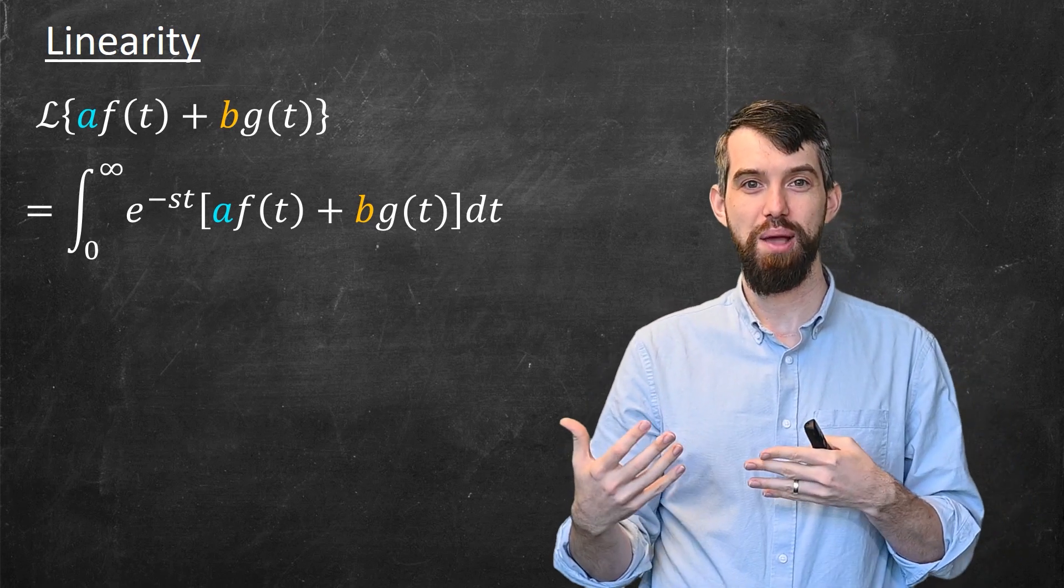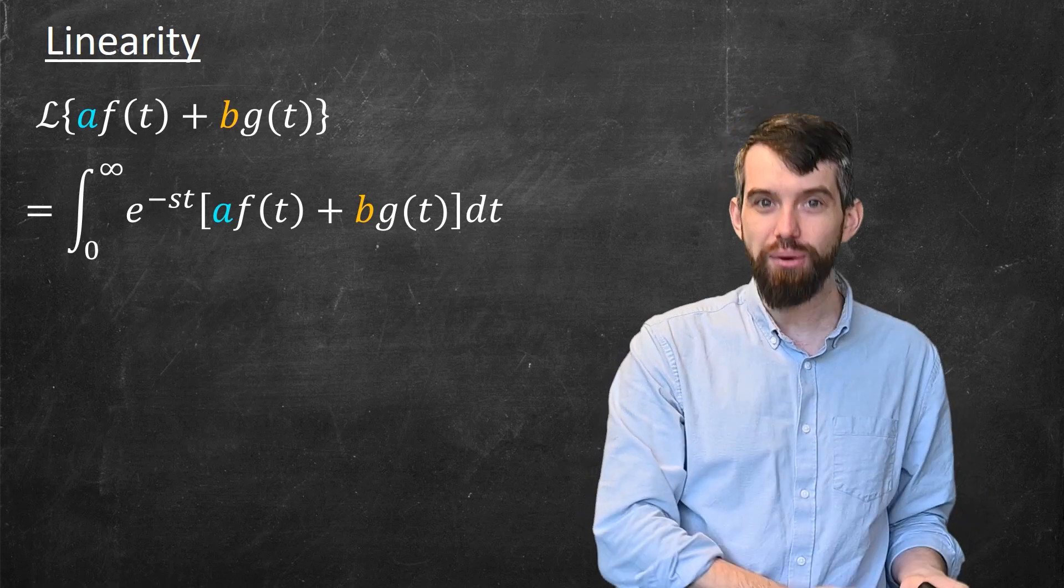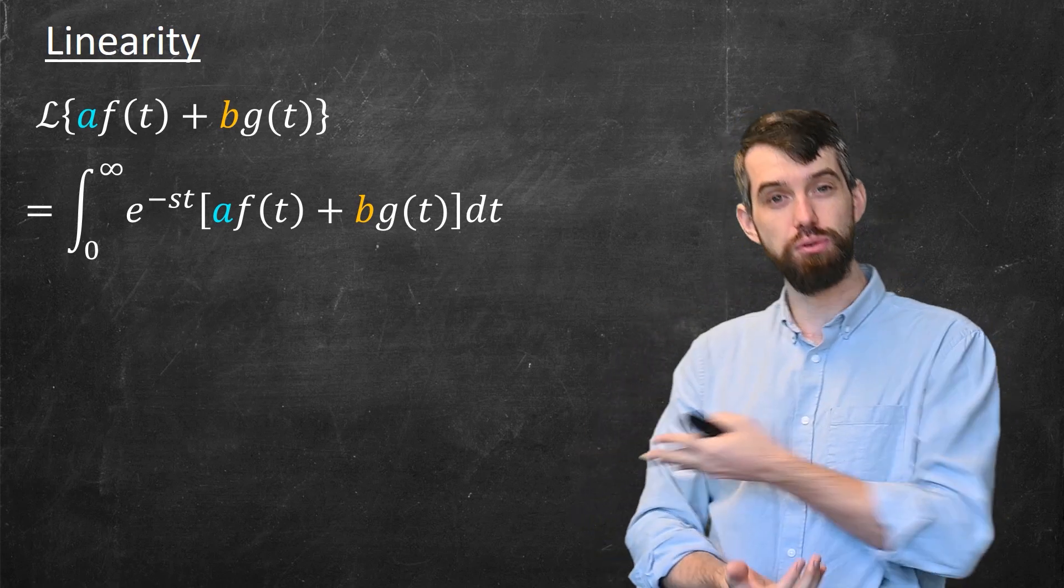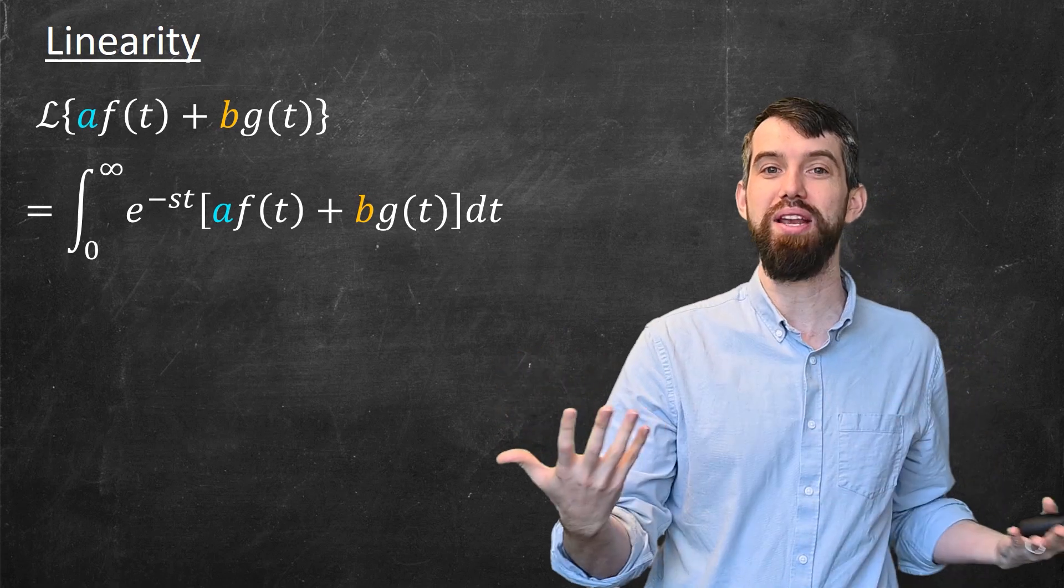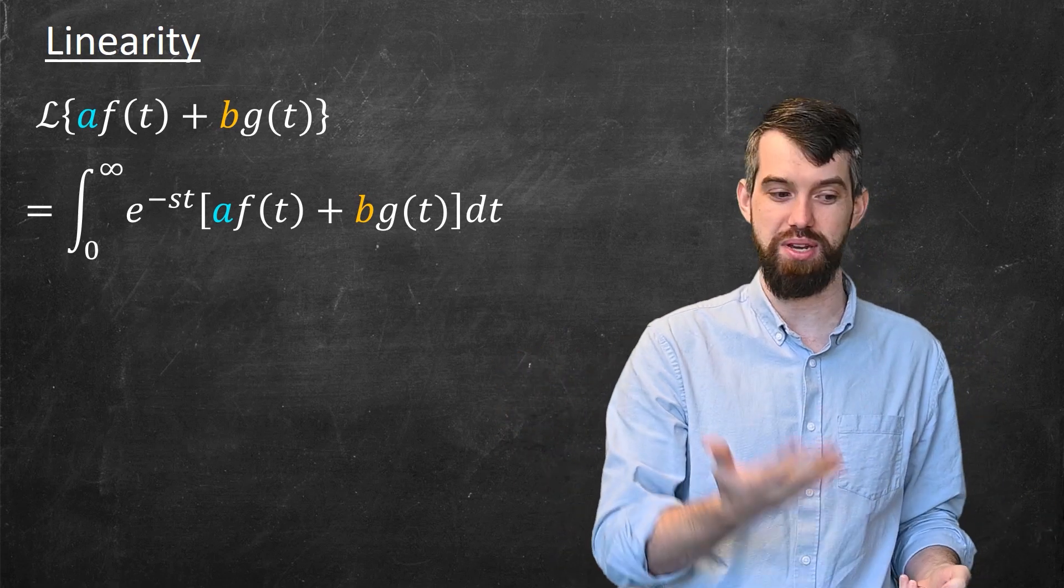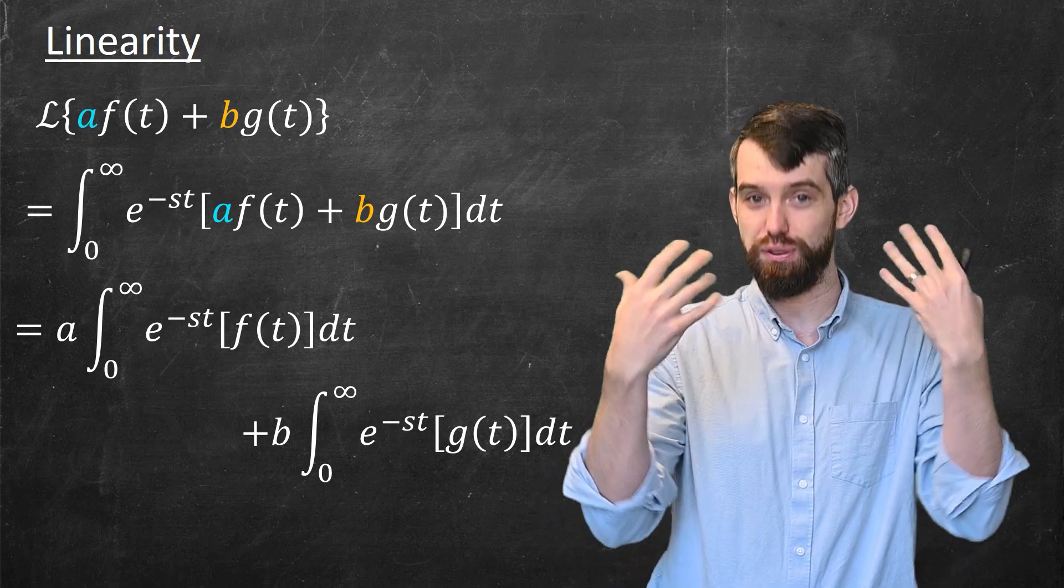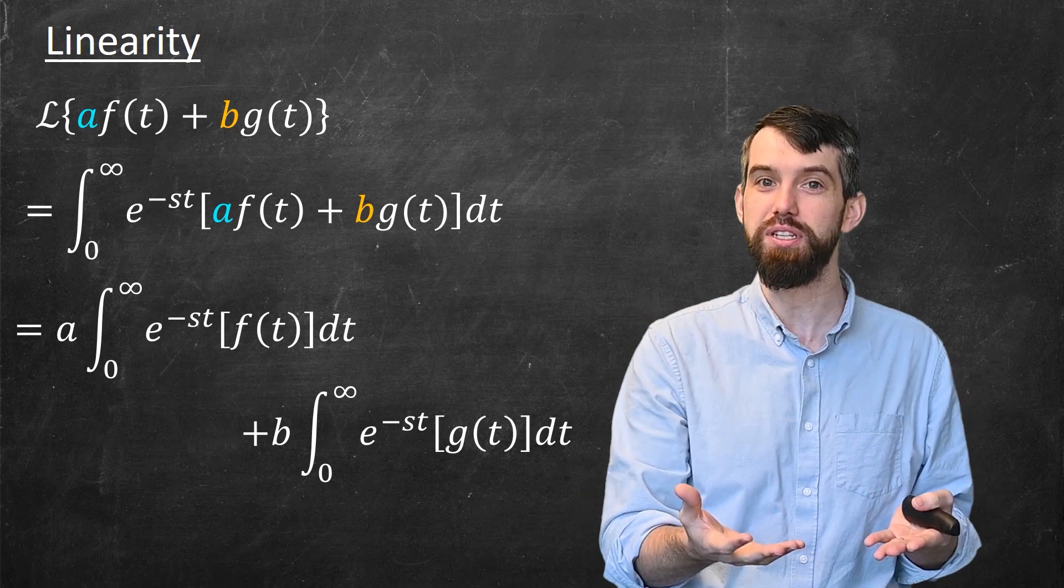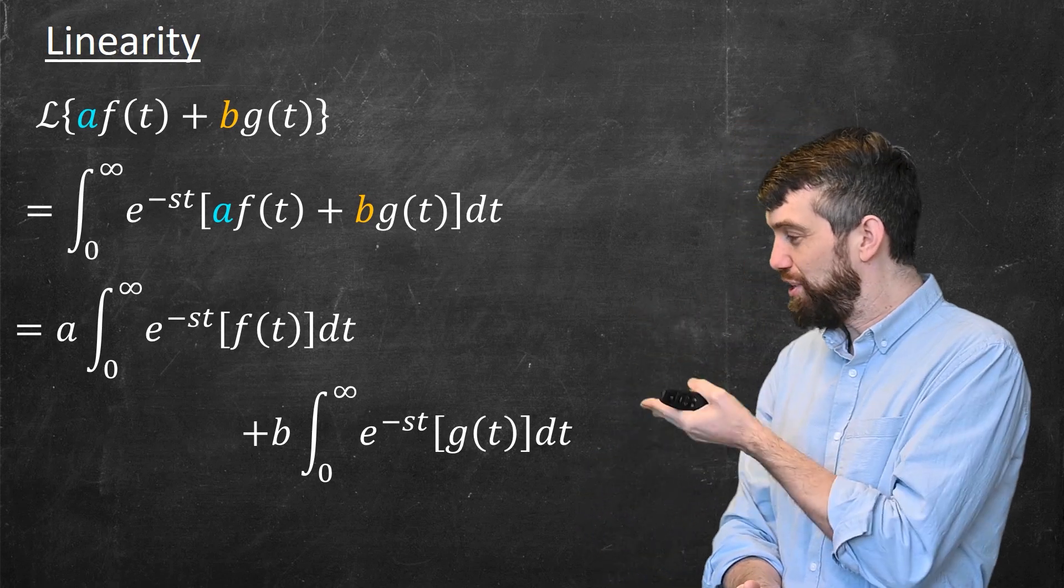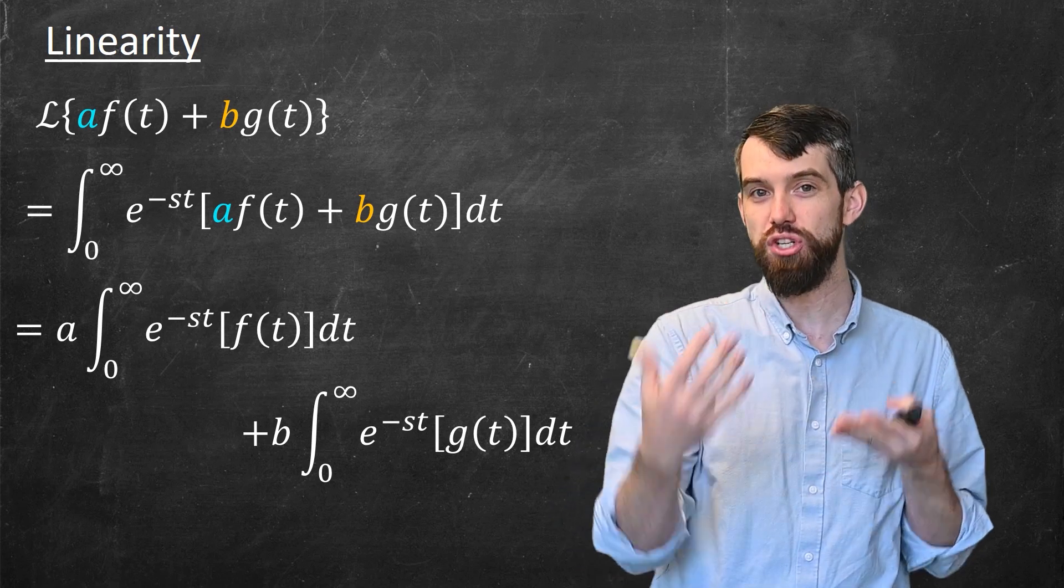Here's the key trick. Back in first-year calculus, we proved linearity of improper integrals like this. Because it's an improper integral, I can do a similar linearity computation and rewrite this as the coefficient a out front times the first integral, the integral of e^(-st) times f(t), plus the coefficient b out front of a second integral that now relates to the g(t)s.